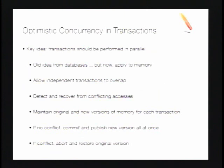Optimistic concurrency in transactions is an old idea. The key idea is that transactions should be performed in parallel — we're taking this from databases and applying it to random access memory. The implementation has to detect and recover from conflicting accesses. To recover, it maintains the original and new versions of memory. If there's no conflict, it commits and publishes the new version. If there is a conflict, it aborts, restores the original version, and perhaps restarts the transaction.